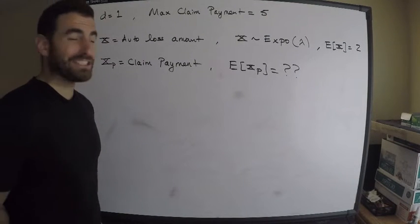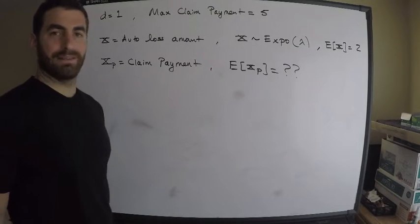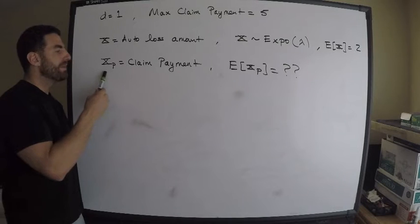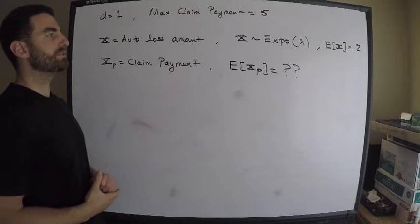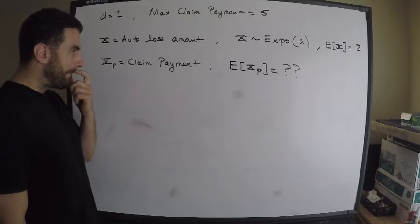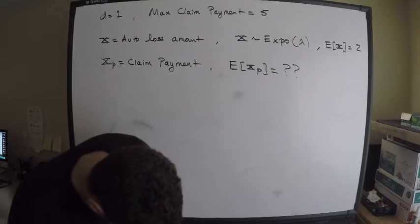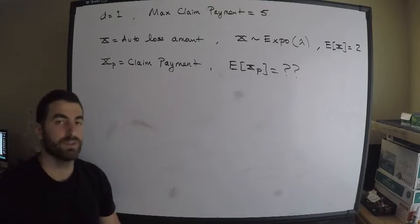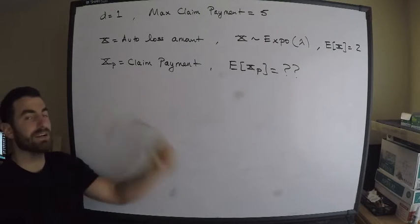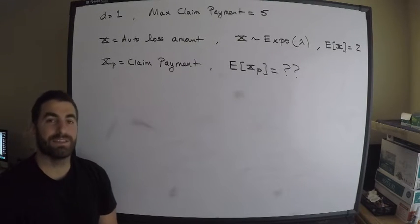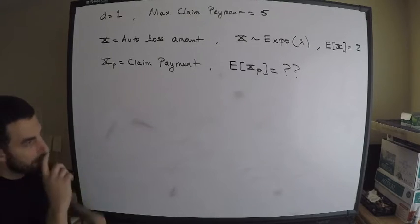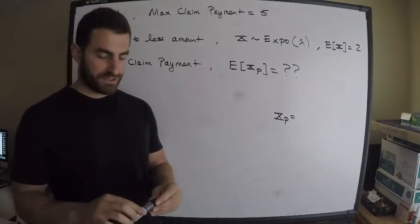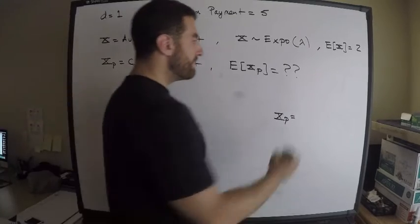What we're actually interested in is the expected claim payment. The notation I use is X of P, or Y sub P — that's the claim payment variable. The first thing I recommend for these types of problems is to write down the values for your claim payment. We've constructed a new random variable and need to identify what values it can take. The claim payment will be piecewise defined.